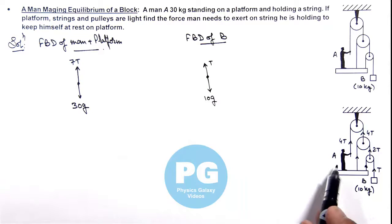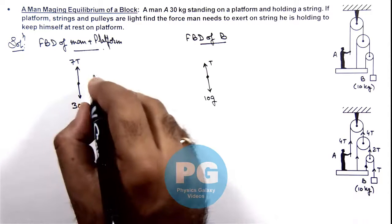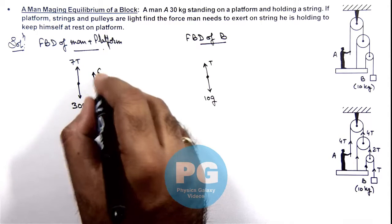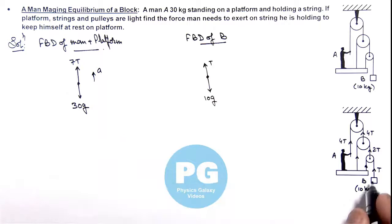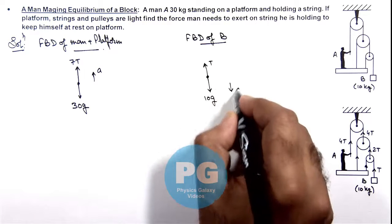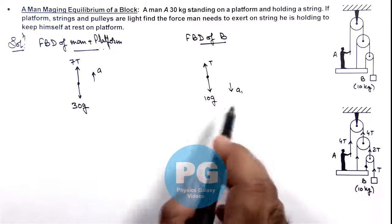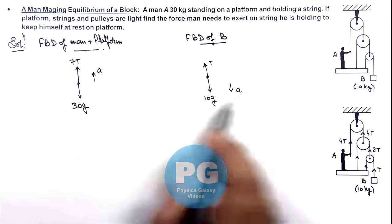If in this situation man is managing himself at rest on platform, and if we consider this man plus platform system is going up with acceleration ay, then the block will come down with acceleration ay1 and we can develop a constraint relation in ay1 and ay.